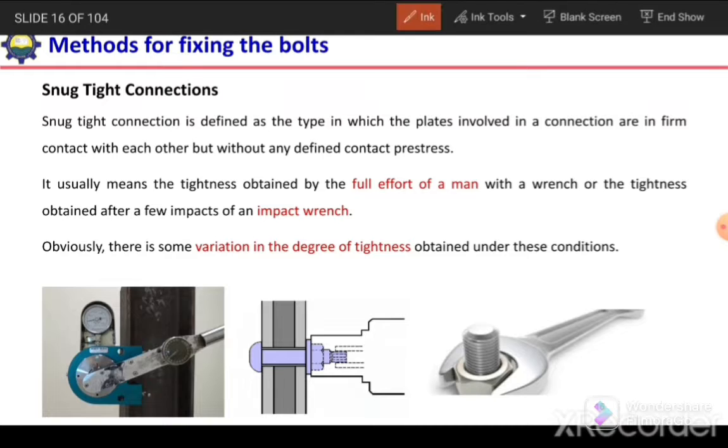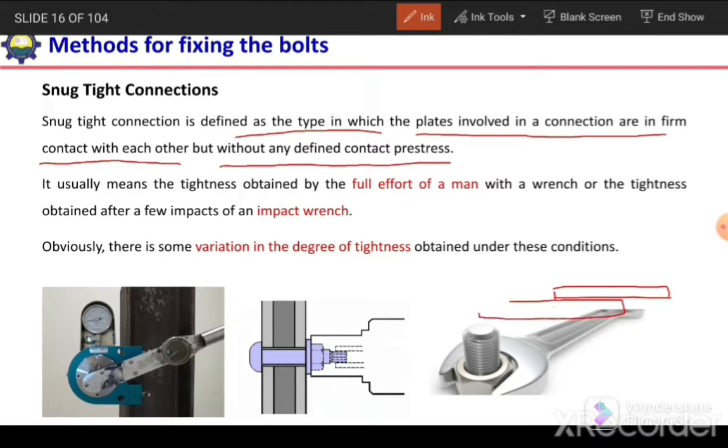A snug tight connection is defined as the type in which the plates involved in a connection are in firm contact with each other but without any defined contact pressure. In case of snug tight connection, the plates are in contact with each other without any gap.